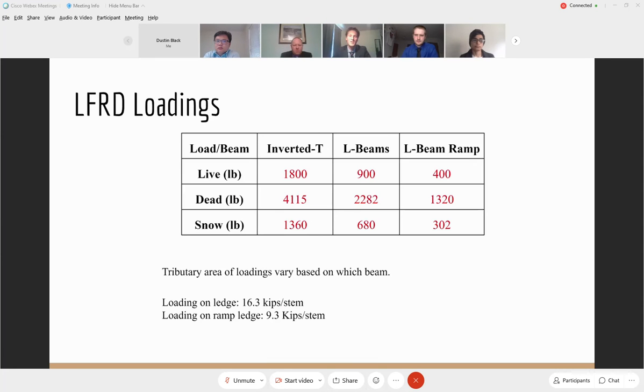On this slide, we can see the loadings that we applied in a RISA model to gain our moment and shear diagrams. The live load we took was 40 pounds per square foot, which was the recommended from the PCI parking structure design manual. The dead load, which takes the self weight of the beams and the double T spandrels into account, and then the snow load, which we calculated based off the snow map of Michigan. These loadings are different based off of the different tributary areas that are acting on each beam. As the inverted T beam has 45 feet of tributary area, and the L beam only has half of that. And then the L beam of the ramp is only 10 feet, since we only have a 20 foot ramp. Also, you can see the loading on the ledge in the bottom of the slide. This takes the live dead and snow load and converts it into a force per stem that is going to be acting on each ledge so that we can calculate the reinforcement required in the ledge.